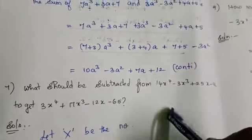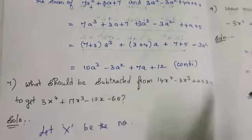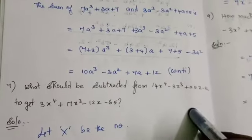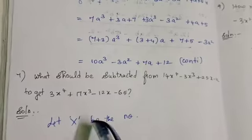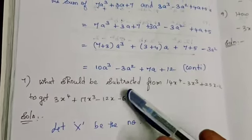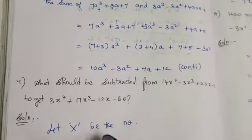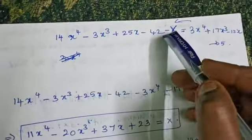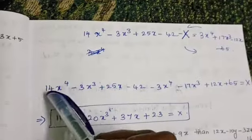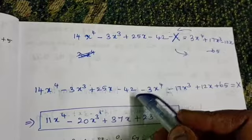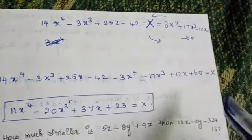Seventh sum: What should be subtracted from this expression to get this expression? You already know this type from previous classes. Let x be the unknown number to be subtracted. So: from-number minus x equals the result. That gives: 14x⁴ minus 3x³ plus 25x minus 42, and this expression comes to the left-hand side. The minus x goes to the right-hand side, becoming plus x.